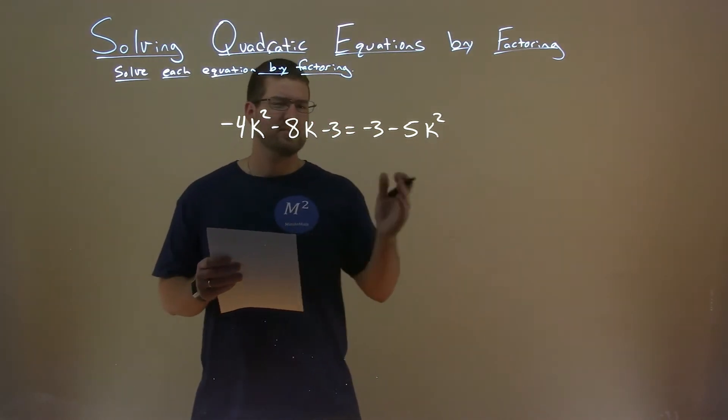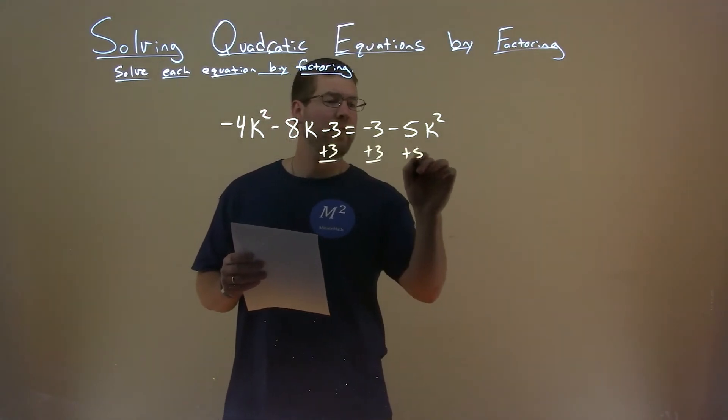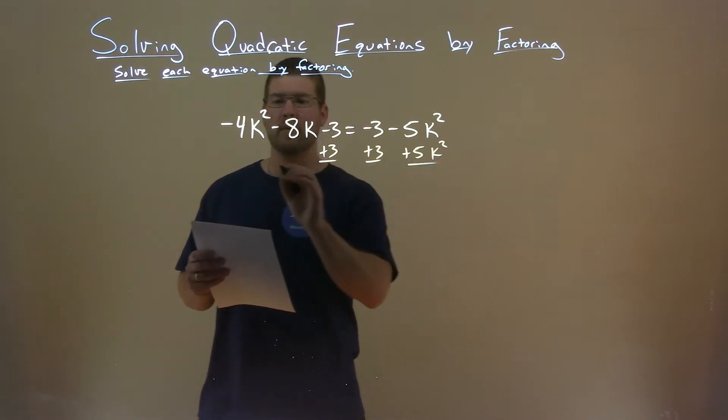Well first thing I want to do is bring everything over to the left hand side. So I'm going to add 3 to both sides and I'm going to add 5k squared to both sides.